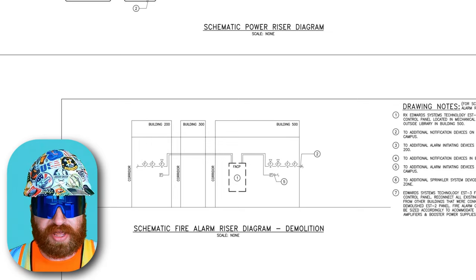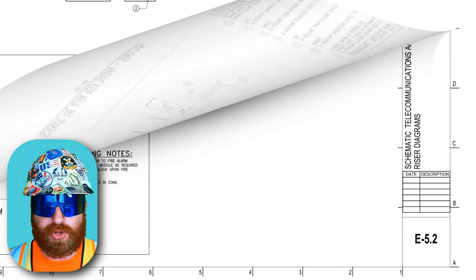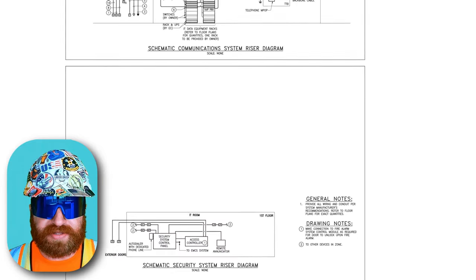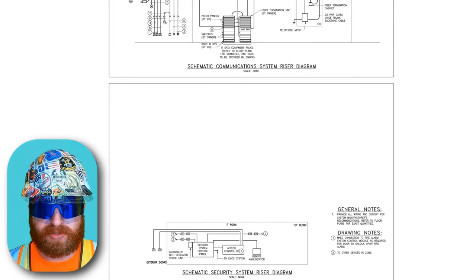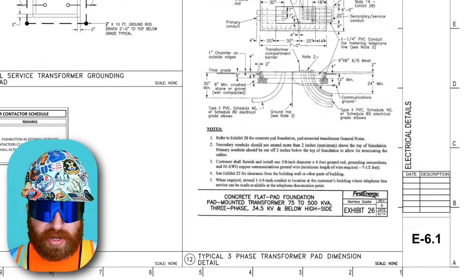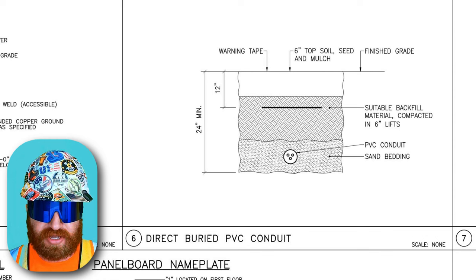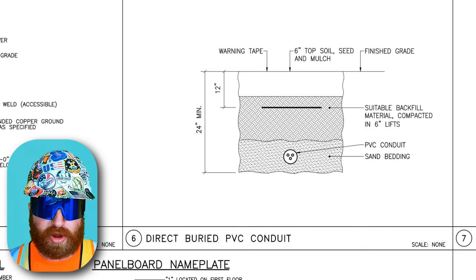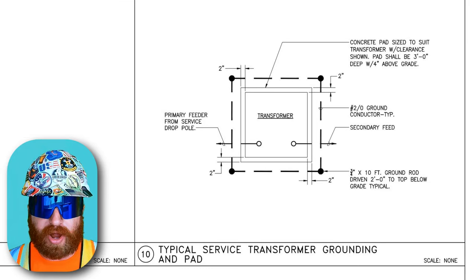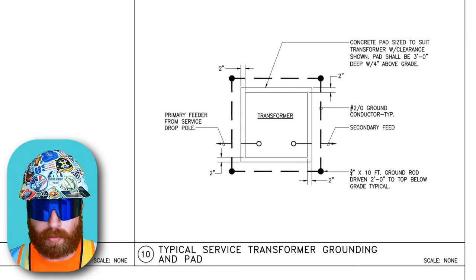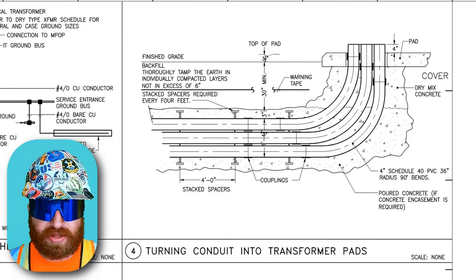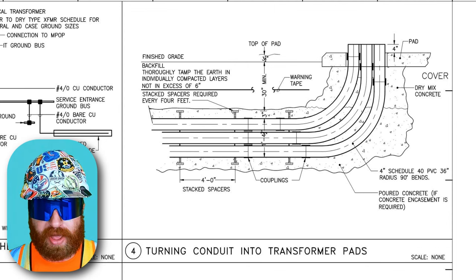Moving on from E5.1 to E5.2, telecom and security riser diagrams — we can briefly zoom in and see the same layout for those specific systems. Then onto E6.1, our electrical details. Looking at detail six, we see how to install conduit underground for light poles. Moving over to detail ten, we see grounding requirements at the transformer.